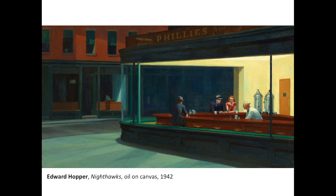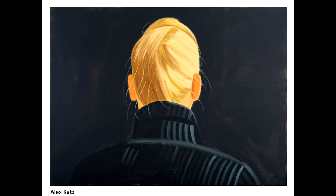In Edward Hopper's painting Nighthawks, the use of darker values conveys not only nighttime but also a sense of aloneness and loneliness. The one lit area inside the diner uses lighter, warm color, which provides a wash on the figures while the rest remains in dark mystery. In Alex Katz's painting, a figure in a darkened space wearing a dark coat is offset by bright yellow hair and intense flesh tones that attract our attention.